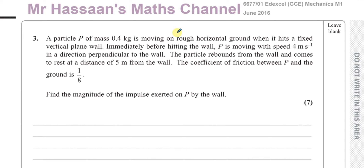We have a few things to consider. We have rough horizontal ground so we'll need to deal with friction — they've given us a coefficient of friction. We need to find the magnitude of the impulse exerted on P by the wall.